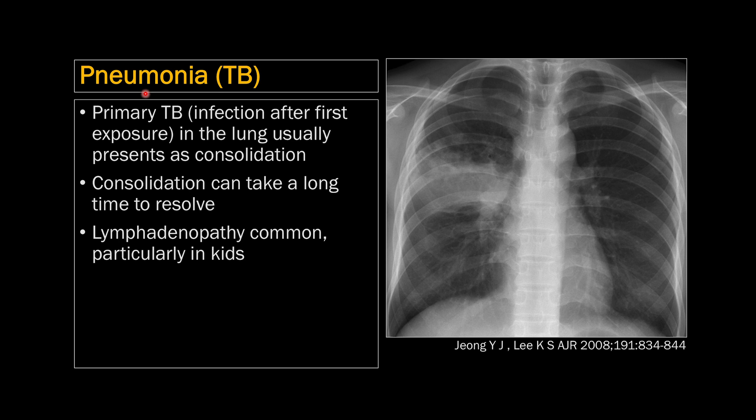The P stands for pneumonia, and there are three types in this mnemonic: atypical pneumonia, lipoid pneumonia, and organizing pneumonia. For atypical pneumonia, many different things can cause a chronic consolidation. The prototypical one is TB, but you can also think about chronic necrotizing aspergillus and other fungal infections.